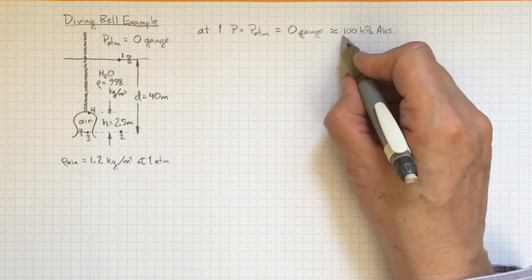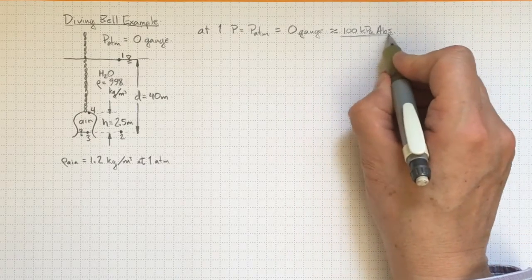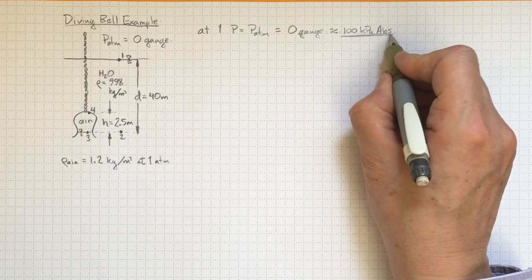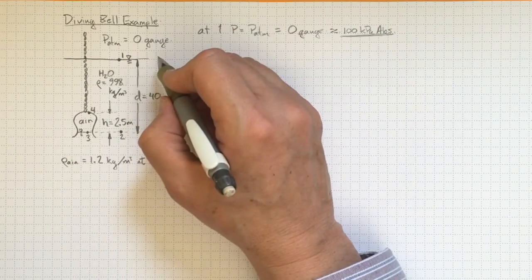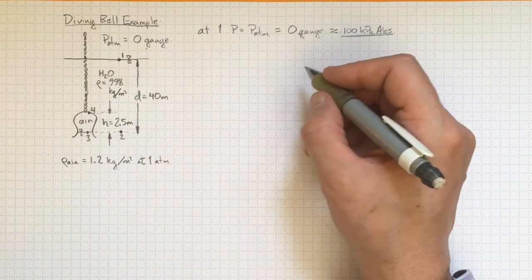This is something that's going to vary from day to day. As the barometric pressure changes, this number will change. All the more reason to work in gauge pressure relative to the local atmosphere.